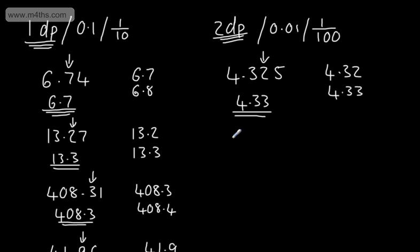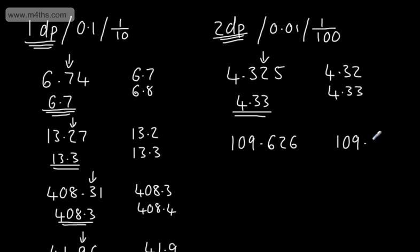If we look at another one — let's say we've got 109.626 — our choices to two decimal places will be 109.62 or 109.63. We can see this is the number that's going to potentially change. That's now in the one-hundredths column, or to the nearest 0.01.